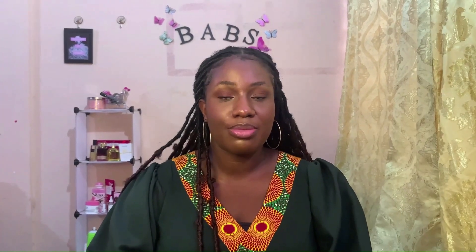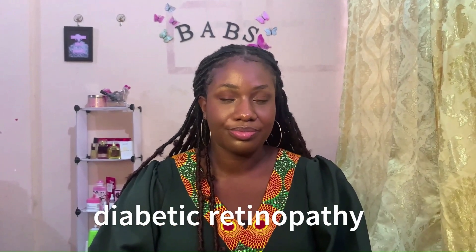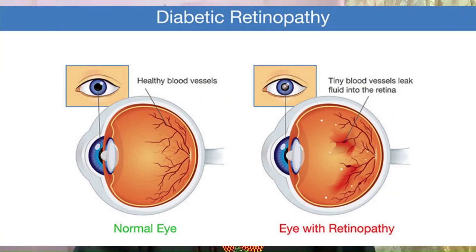The first is diabetic retinopathy. There is a part of the eye known as the retina, located at the back of the eye — it is a light-sensitive layer. It takes information from the outside world, sends it to the brain for interpretation as images. In diabetic retinopathy, the blood vessels in this retina become leaky and swollen, and if diabetes is not controlled, you may end up going blind.